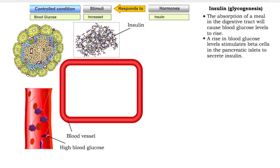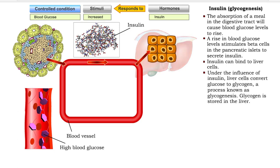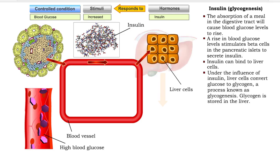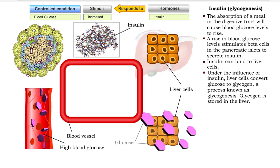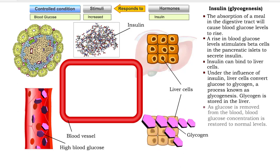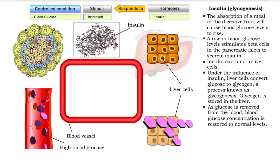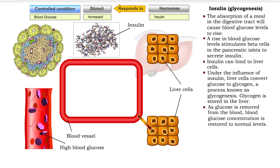Insulin binds to liver cells. Under the influence of insulin, liver cells convert glucose to glycogen, a process known as glycogenesis. As glucose is removed from the blood, blood glucose concentration is restored to normal levels.